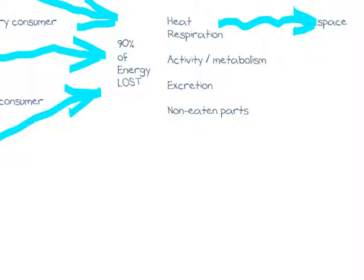The only other point we found on the mark schemes was the unit used: energy per unit area per unit time. For example, kilograms per meter squared per year, which the IB prefers to see written like this.